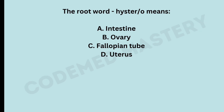The root word 'hystero' means — option A: intestine, option B: ovary, option C: fallopian tube, option D: uterus. The right answer is option D, uterus. The root word for large intestine is 'colo' and small intestine is 'ileo.' The root word for ovary is 'oophor-o,' for fallopian tube is 'salpingo,' and for uterus is 'hystero.'